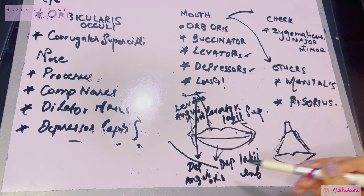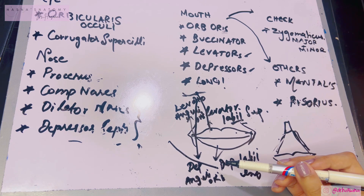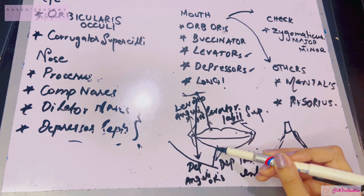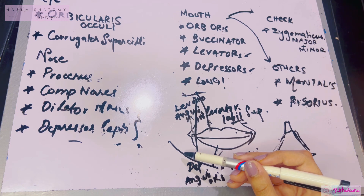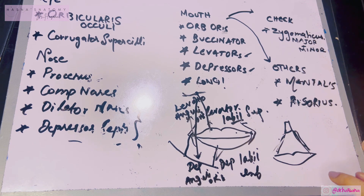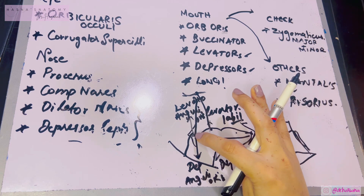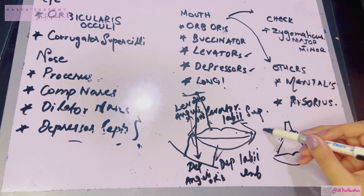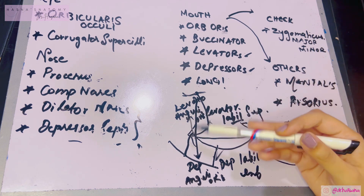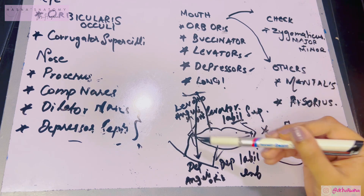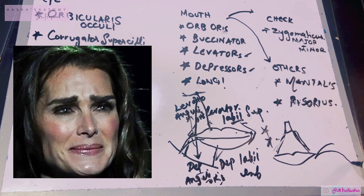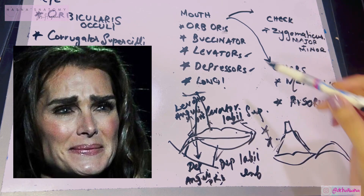For the depressors — both arise from the oblique line on the mandible. The depressor labii inferioris comes from this oblique line and attaches to the lower lip, depressing it downward. The depressor anguli oris also comes from the oblique line and inserts into the angle of the mouth, depressing it downward. Remember: the depressor anguli oris causes depression of the angle of the mouth — this is the expression of grief and sadness.